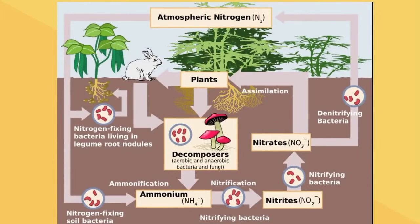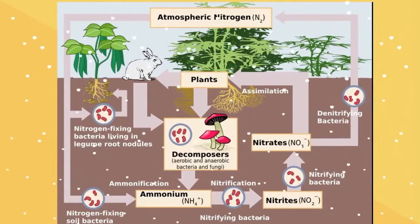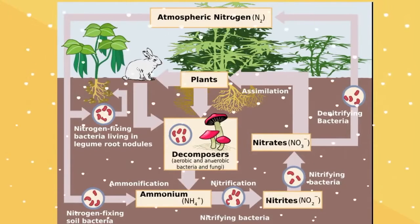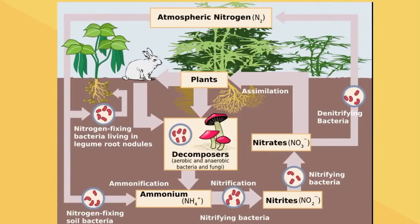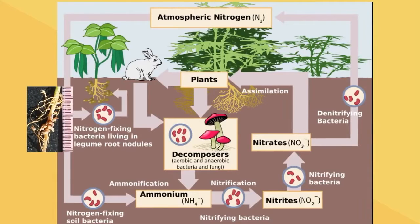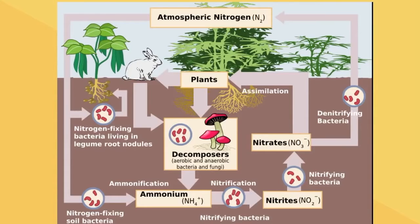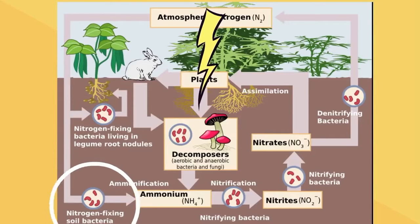Nitrogen in the atmosphere falls to the earth by precipitation such as rain or snow. Once in the soil, it finds its way to bacteria on the roots of plants. At the roots, the nitrogen is combined with hydrogen to make ammonia in a process called nitrogen fixation. Lightning in the atmosphere can also do this.